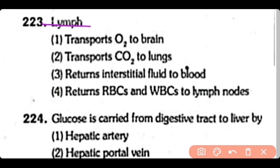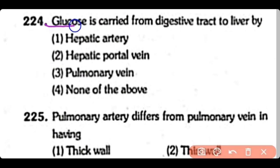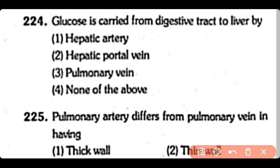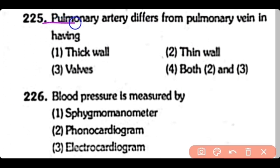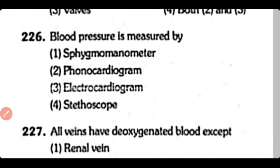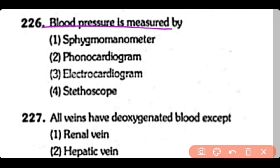Q223. Lymph transports oxygen to the brain, transports carbon dioxide to the lungs, or returns interstitial fluid to the blood. The correct answer is that lymph returns interstitial fluid to the blood. Q224. Glucose is carried from the digestive tract to the liver by the hepatic portal vein — correct answer is Option 2. Q225. Pulmonary artery differs from pulmonary vein in having a thicker wall/valve — correct answer is Option 1. Q226. Blood pressure is measured by a sphygmomanometer — correct answer is Option 1.